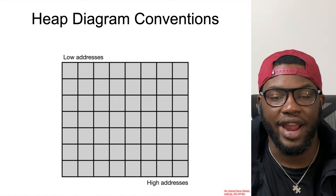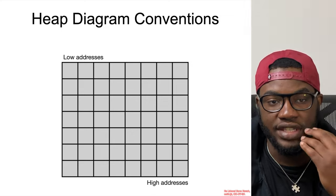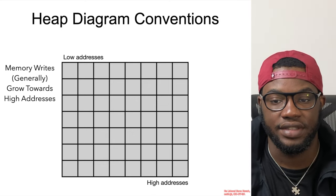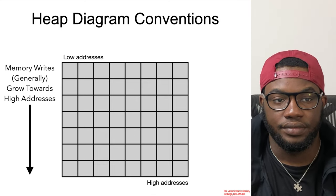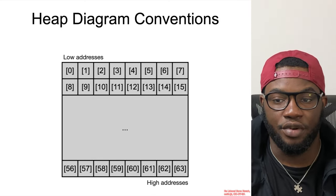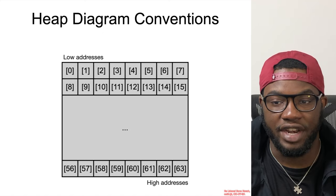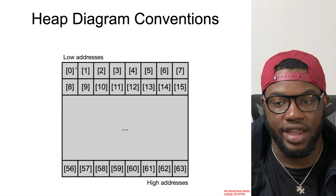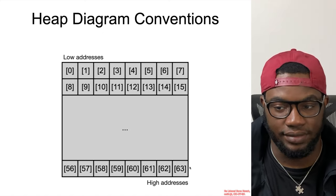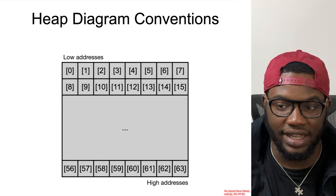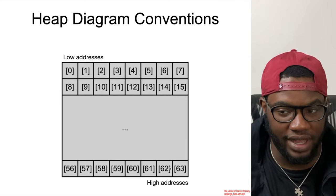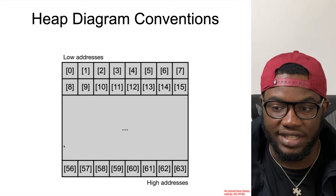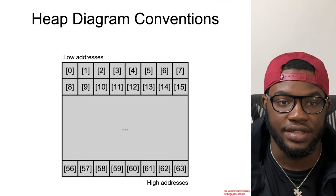Data writes will occur from the lower addresses to the higher addresses on the heap. For example, consider an array where index zero will be located at the left and the last index will be located at the right side of the slide towards higher addresses.